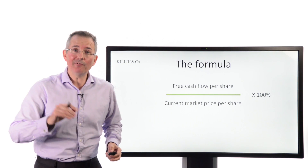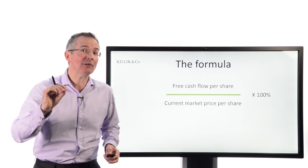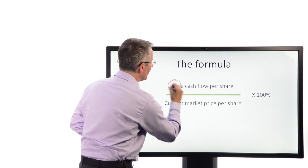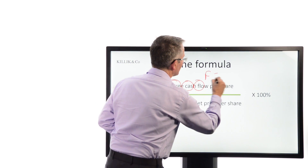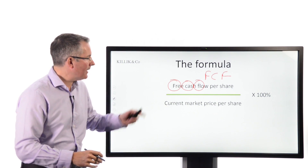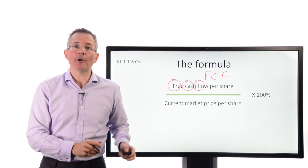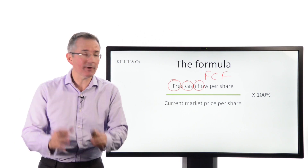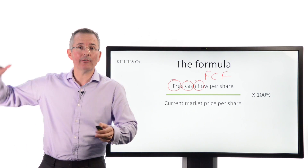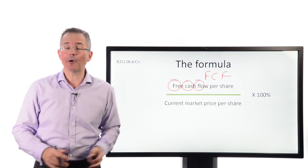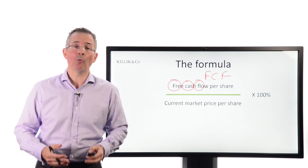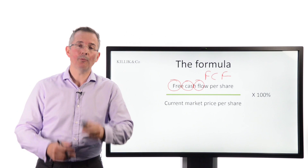If you find the numbers vary a bit, that's because the exact definition of free cash flow does vary. Free cash flow per share, also known as FCF, is what we're hunting down. We divide free cash flow per share by the current market price per share — or equivalently, total free cash flow divided by total market capitalization, which is the equity value of the business: number of shares times share price — and express the whole thing as a percentage. We might come out with, say, five percent, and then we need to ask what we can interpret from that and what we can compare it to.